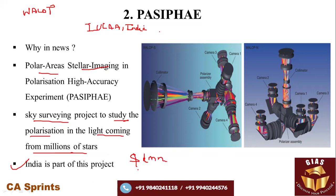WALOP is an instrument mounted on two small optical telescopes. It is used to detect polarized light signals. The Wide Area Linear Optical Polarimeter is thus key to the PASIPHAE sky survey project, which studies the polarization of light coming from a large number of stars simultaneously.